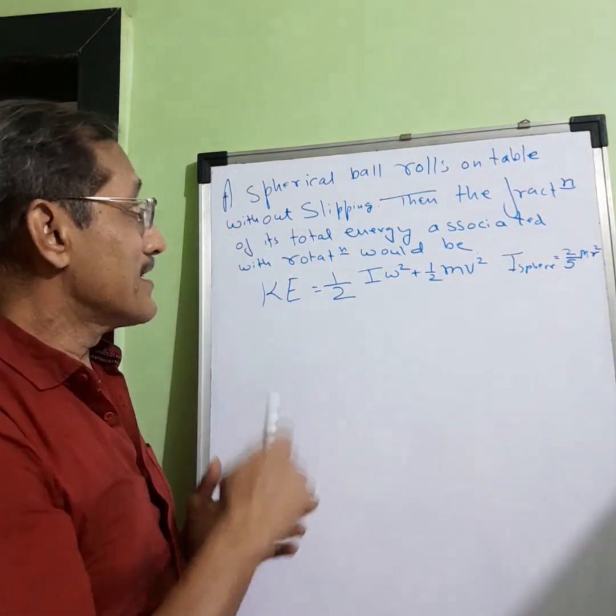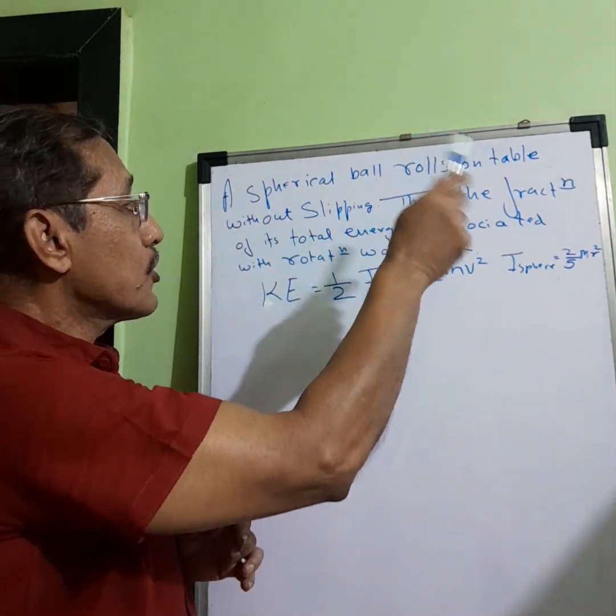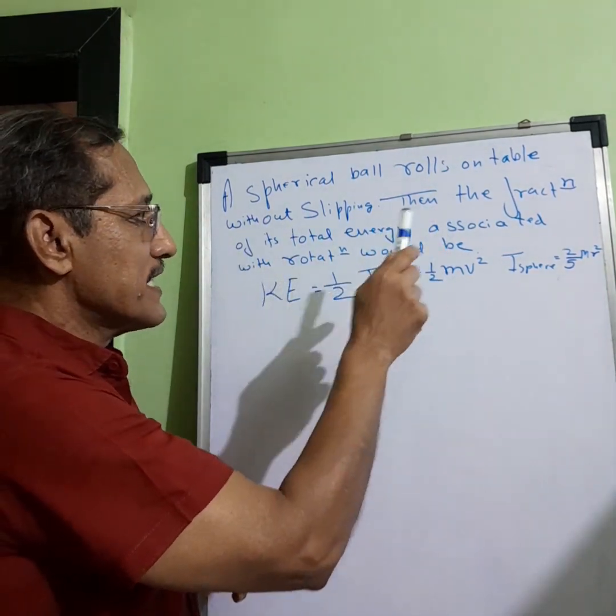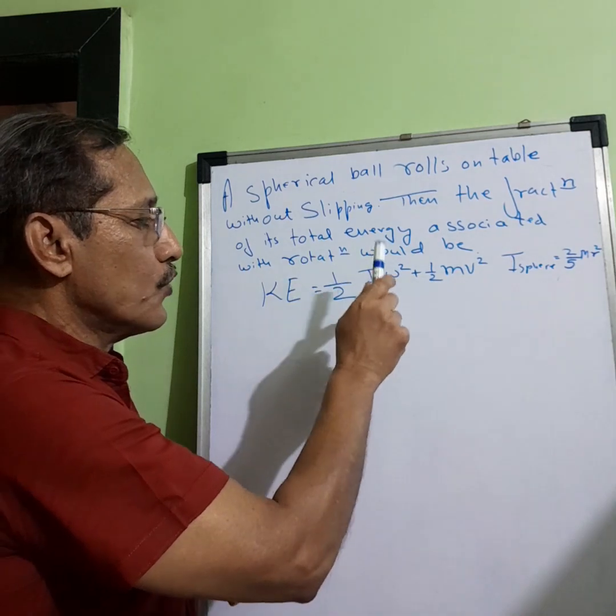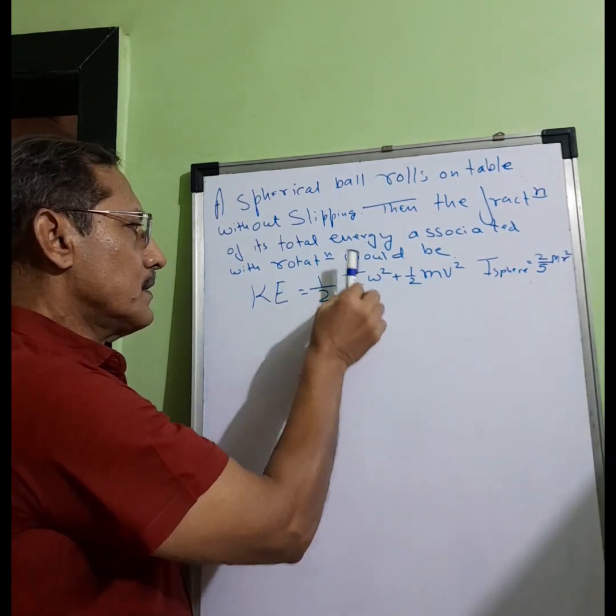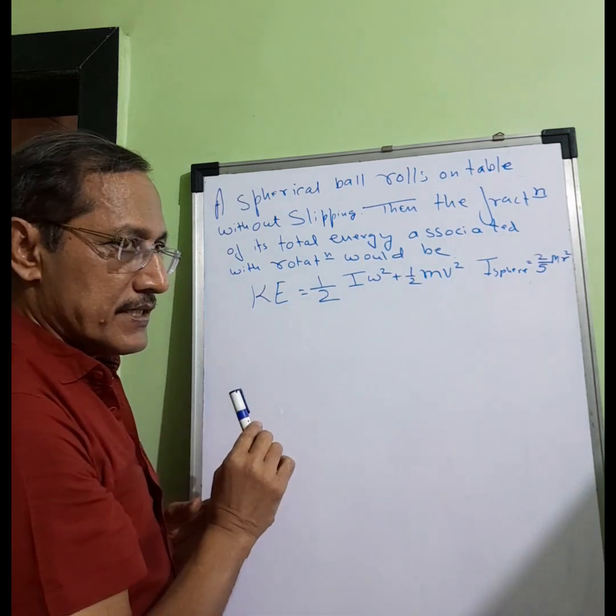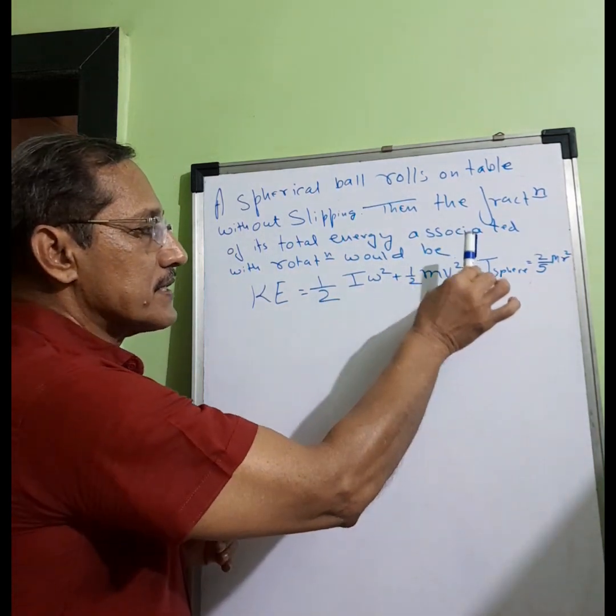Let's try and understand this. A spherical ball rolls on a table without slipping. Then the fraction of its total energy associated with the rotation would be rotational kinetic energy over total energy. This involves rotational kinetic energy, linear kinetic energy, and moment of inertia.